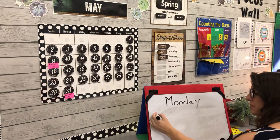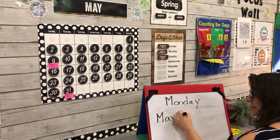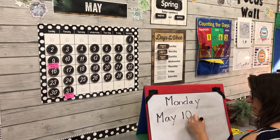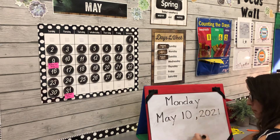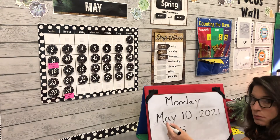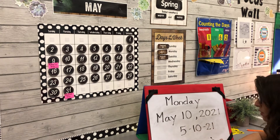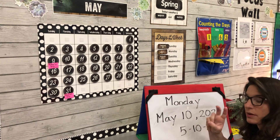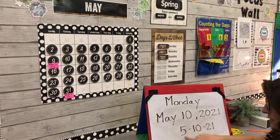Today is Monday and it's the month of May, the 10th day, 2021. The short way to write it would be five — because May is the fifth month — dash 10 dash 21. January, February, March, April, May — May is the fifth month, that's why this is a five.